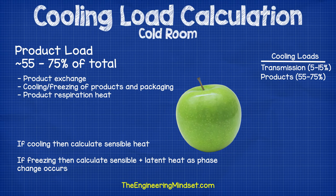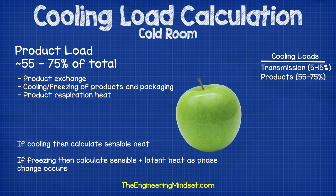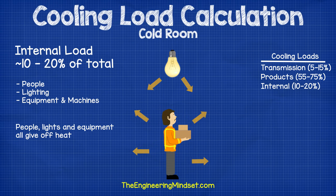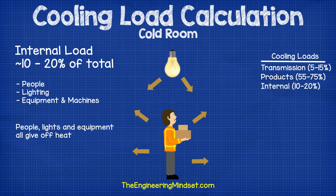You also need to account for the packaging as this will inherently be cooled also. Lastly, if you're cooling fruit and vegetables then these products are alive and they will generate some heat, so you need to account for the removal of this also. The next thing to consider is the internal loads which account for around 10 to 20 percent. This is the heat given off by people working in the cold room as well as the lighting and equipment such as forklift trucks.